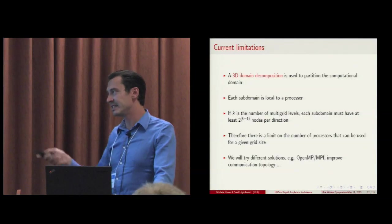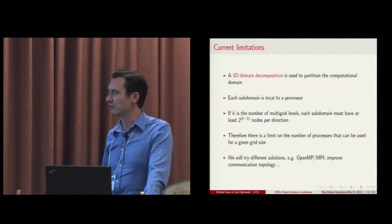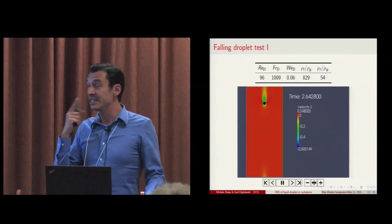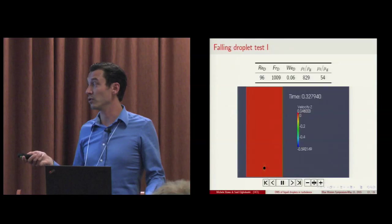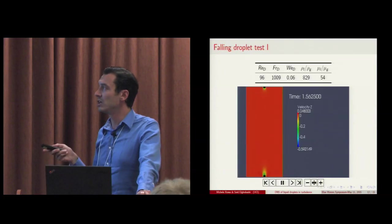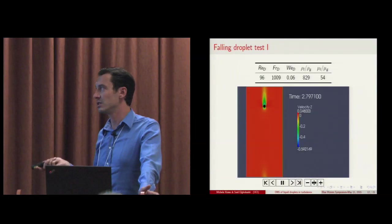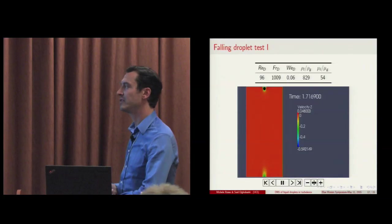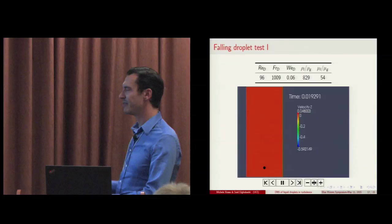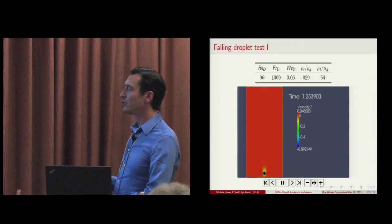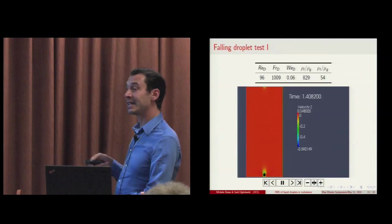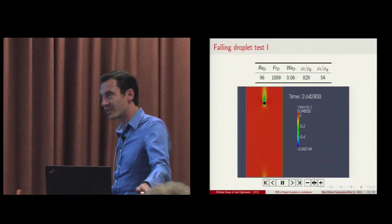And this is exactly what we were trying to achieve. Now, what you see here is our first validation test of our code. So for the moment we don't include turbulence yet because we want to test that the code is able to solve and tackle the physics we are interested in. What you see here is a droplet, initially spherical, that is set into quiescent air.